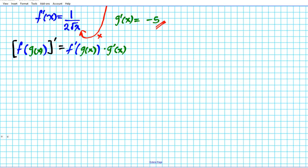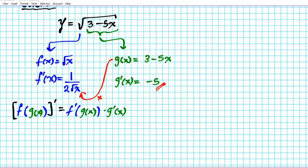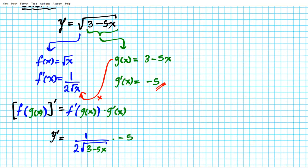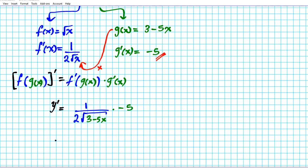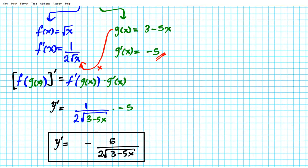So y prime is going to be — let's color code it so you can see exactly what's going on. We have 1 over 2 root x, but instead of x we substitute g of x, which is 3 minus 5x. This is f prime of g of x — the derivative of the outer function evaluated at the inner — multiplied by the derivative of the inner function, which is negative 5. Simplifying, y prime equals negative 5 over 2 root of 3 minus 5x. This is the derivative of the original function y equals the square root of 3 minus 5x.